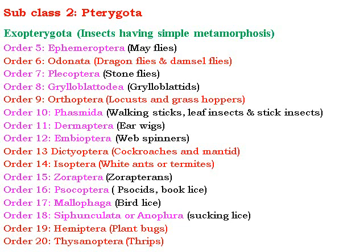Exopterygota includes orders with simple metamorphosis: Ephemeroptera (mayflies), Odonata (dragonflies and damselflies), Plecoptera (stoneflies), Blattodea (cockroaches), Orthoptera (locusts and grasshoppers), Phasmatodea (walking sticks and leaf insects), Dermaptera (earwigs), Embioptera, Isoptera (white ants and termites), Psocoptera (booklice), Mallophaga (bird lice), Anoplura (sucking lice), and Hemiptera (plant bugs and true bugs). Orders highlighted in red font are of importance in agriculture; the rest are for zoological study purposes.